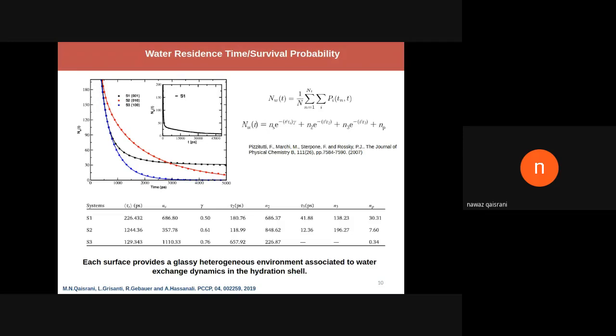We compute residence times—how long the water continuously stays in the hydration shell of each surface—and fit these curves with a function containing three exponentials: one stretched exponential and two normal exponentials. This shows there are different timescales associated with water exchange dynamics. The gamma value tells you how heterogeneous the decay is. If gamma is less than one, it's a glassy type of environment; if equal to one, it's a normal decay. Each surface provides a glassy heterogeneous environment with different gamma values.